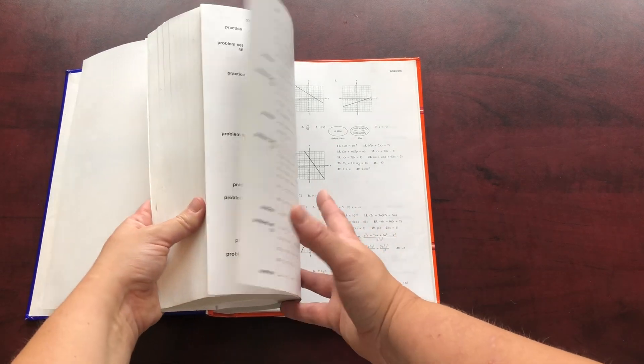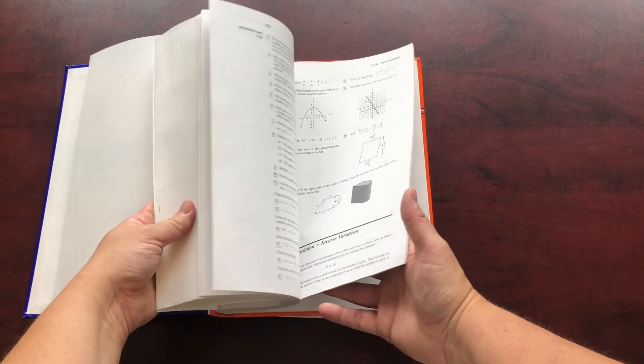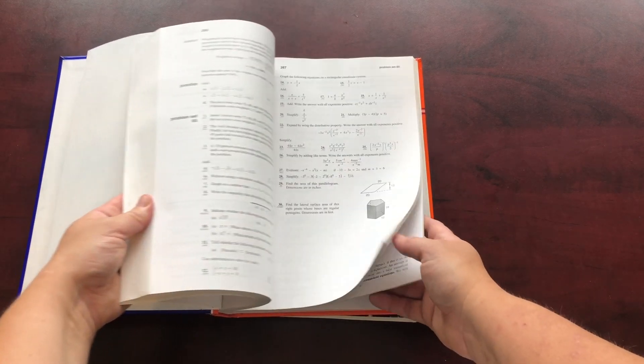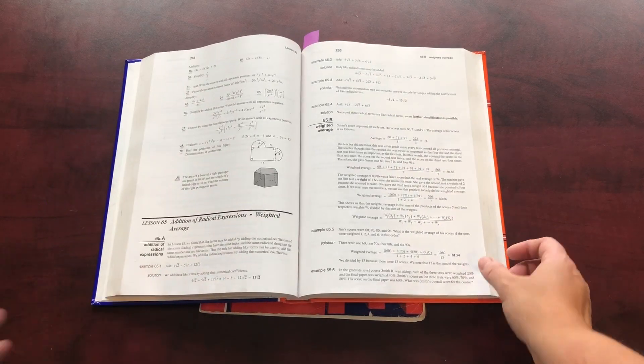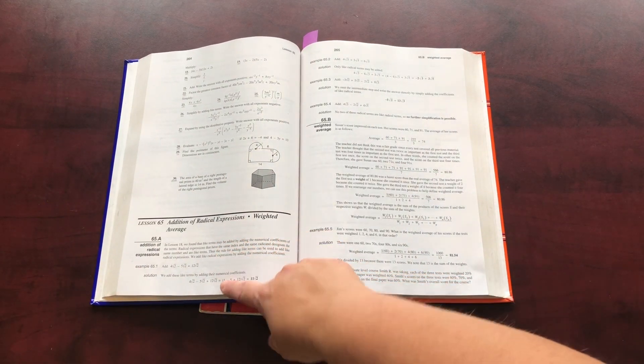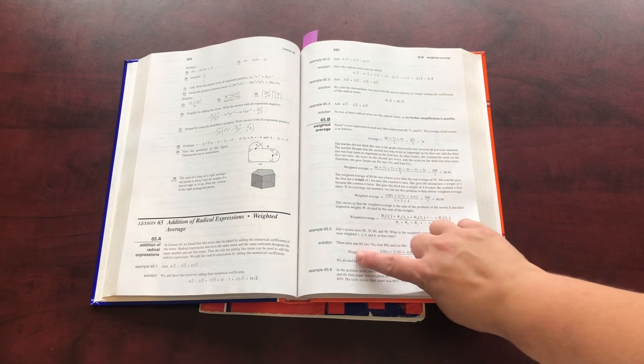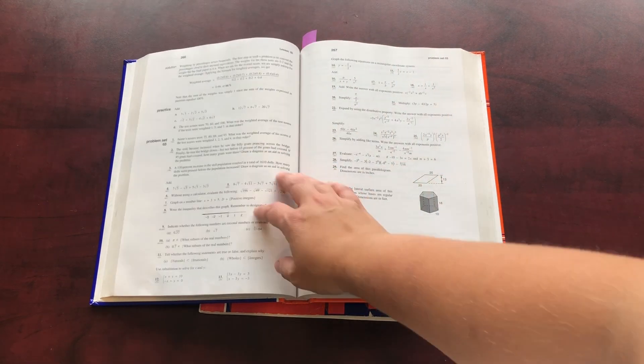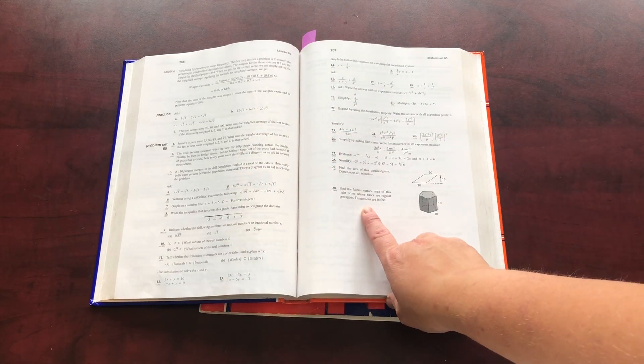The index, the answers to the odd number questions, the glossary, and then the lessons are set up very similarly. So let's see. Here's lesson 65. So they're going to be reading, looking at the examples, giving it a try, seeing the solution, making sure they understand it. They have the practice for the day, and then they have the problem set with 30 questions in it.